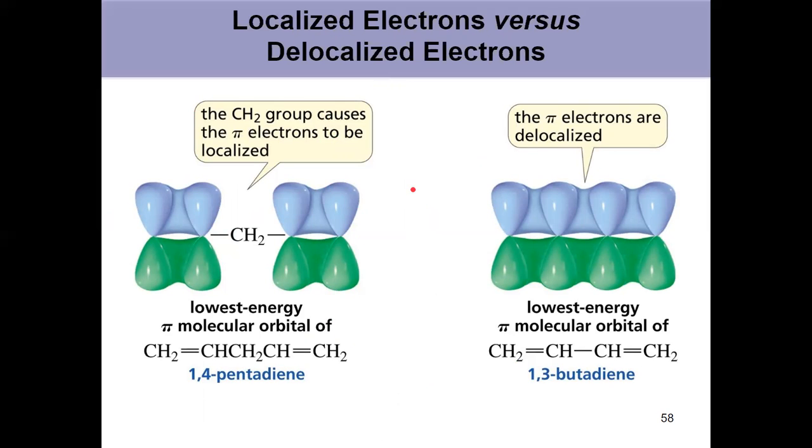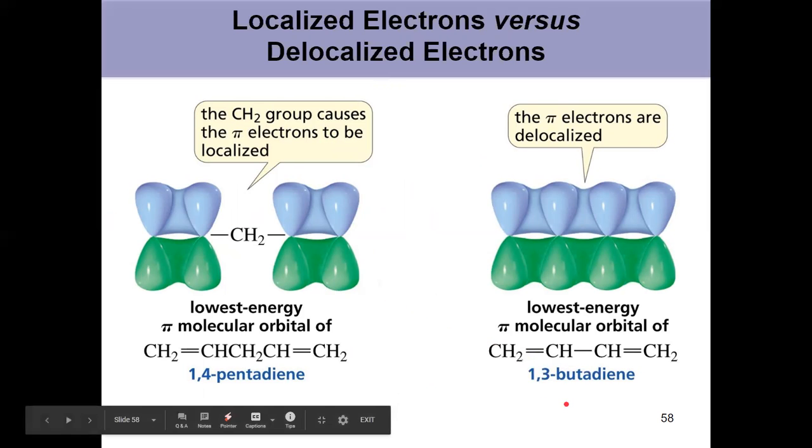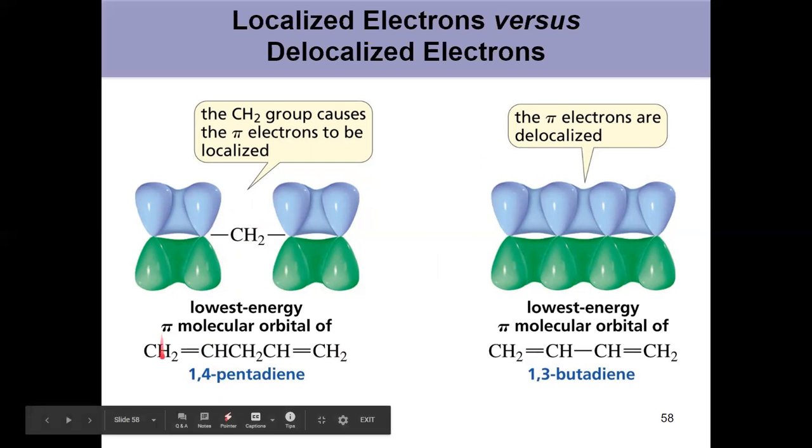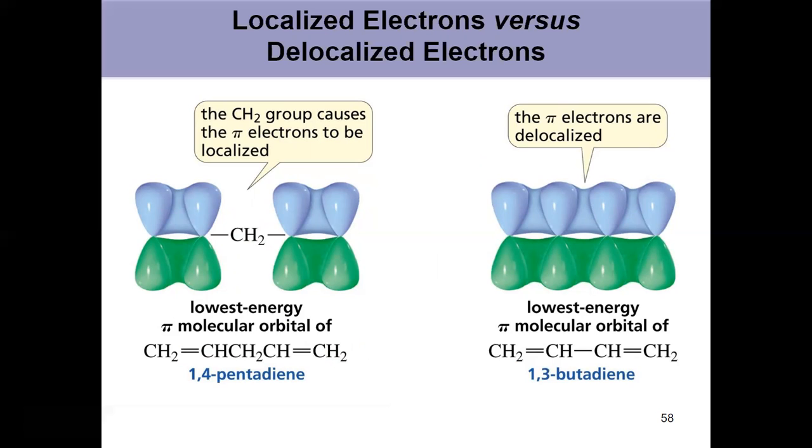So going again, comparing things from the second video, 1,3-butadiene, which we've talked about for all of this video, that has delocalized electrons because all of those p orbitals can overlap with one another. 1,4-pentadiene has that sp3 hybridized carbon in the middle. So now it doesn't have a p orbital. These electrons can't delocalize. 1,4-pentadiene has isolated dienes. 1,3-butadiene, they're conjugated. So know those differences, conjugated versus isolated or localized.